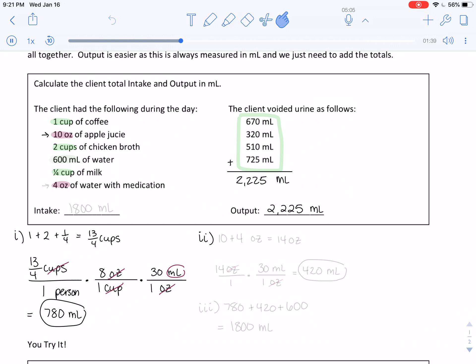Part 2 would be adding the ounces together. So 10 plus 4 ounces is 14, and then we have 30 milliliters per one ounce again. Cancel these units, and we are left with 420 milliliters. Our last step is to add our 780, 420, and 600 milliliters, so that we get a total of 1,800 milliliters for intake or input.